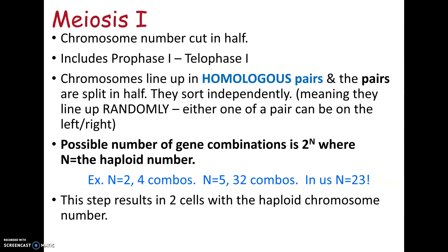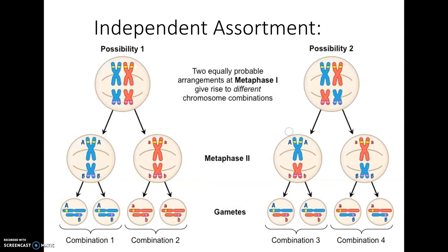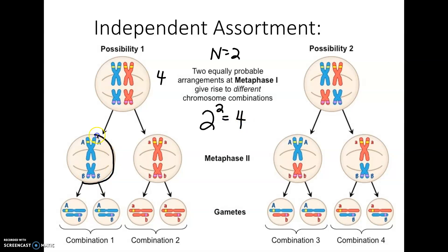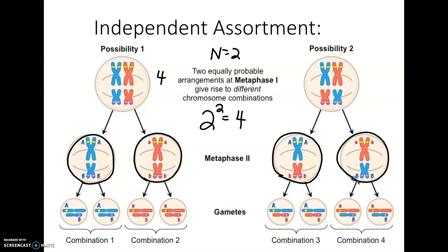This concept is called independent assortment. At the end of meiosis I, we have two haploid cells. For an organism with just four chromosomes (n = 2), there are four possible outcomes: both big chromosomes together, both small together, big blue with small pink, or big pink with small blue. These four combinations represent all possible results of independent assortment for that organism.